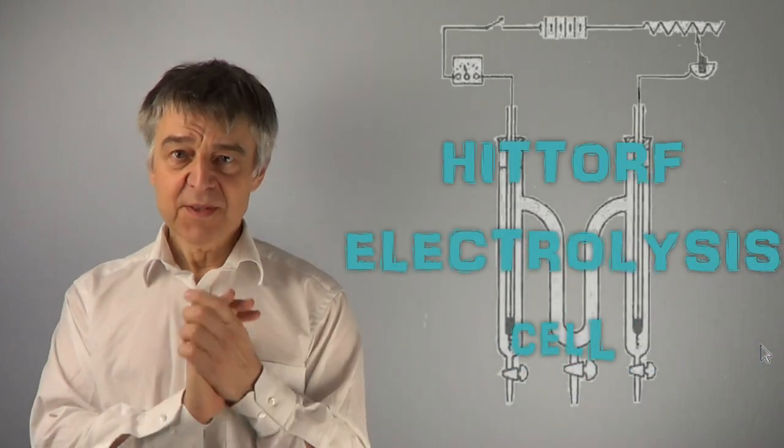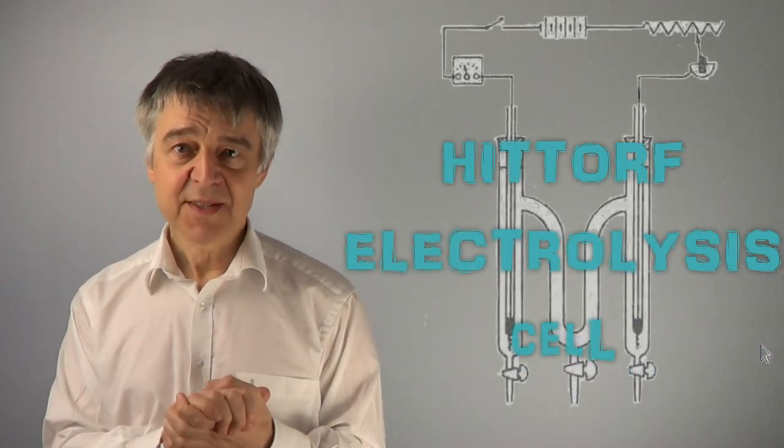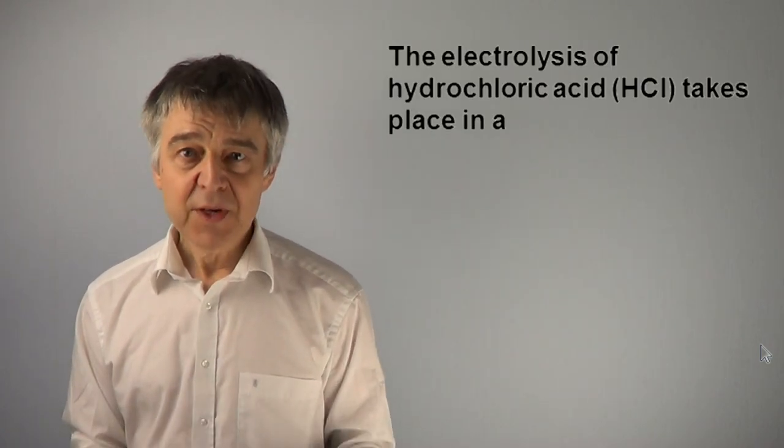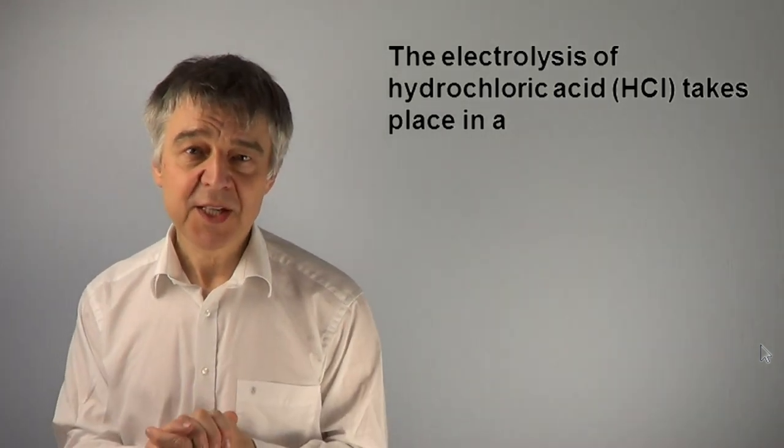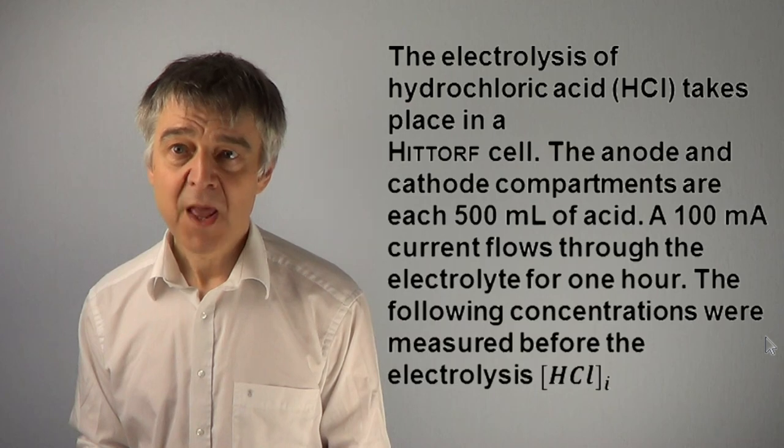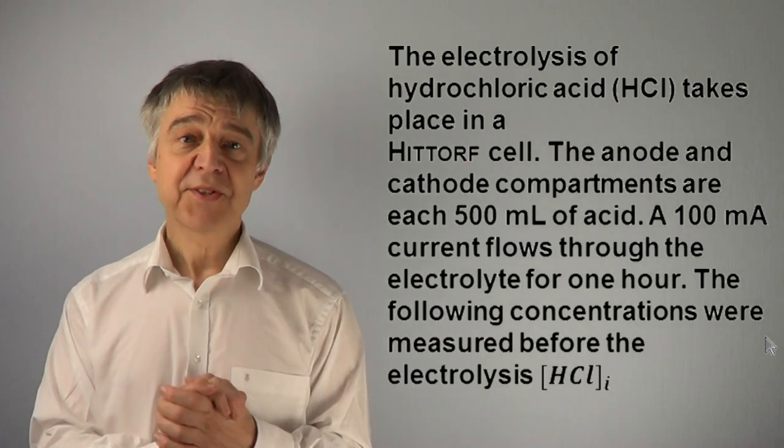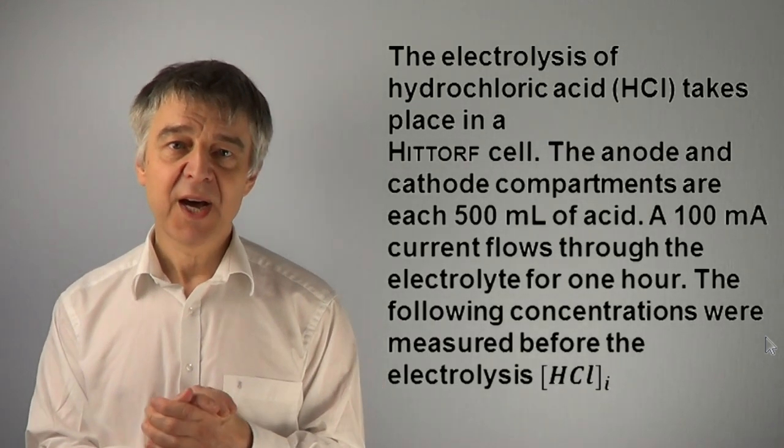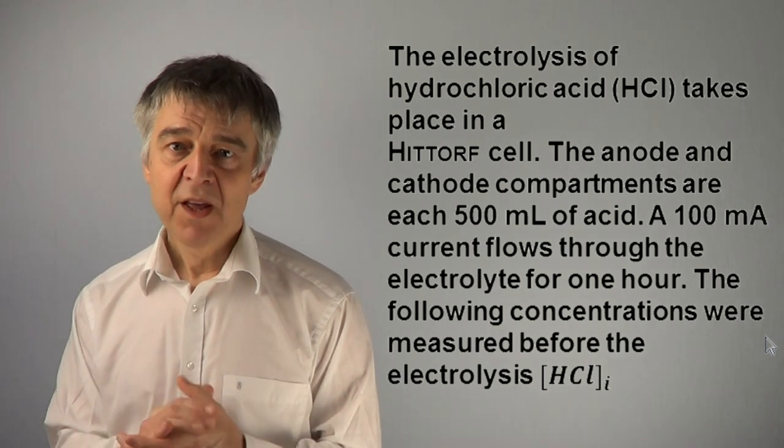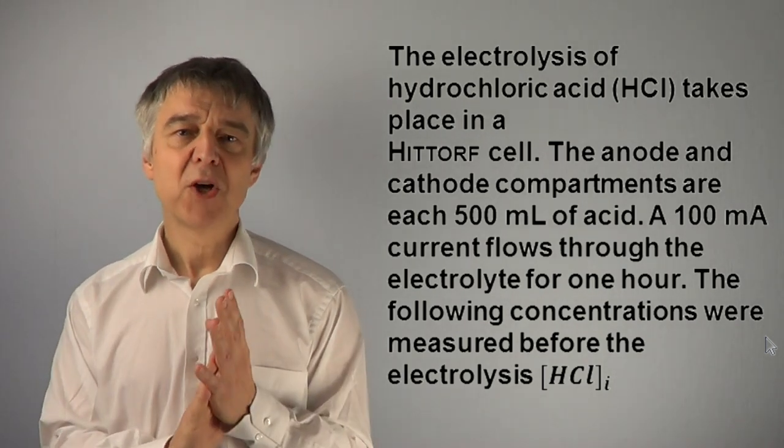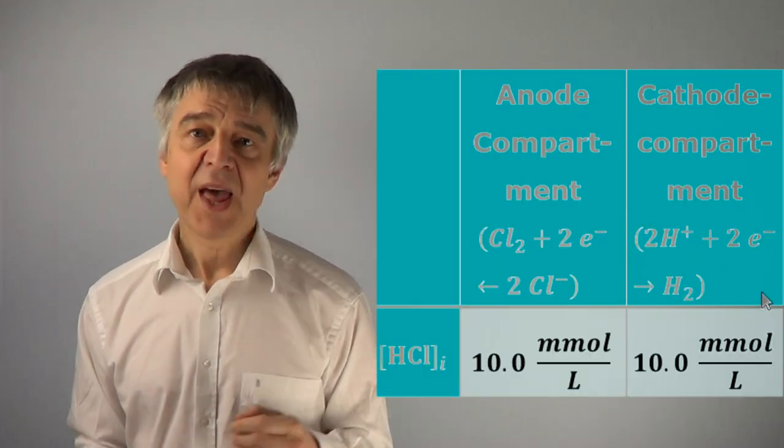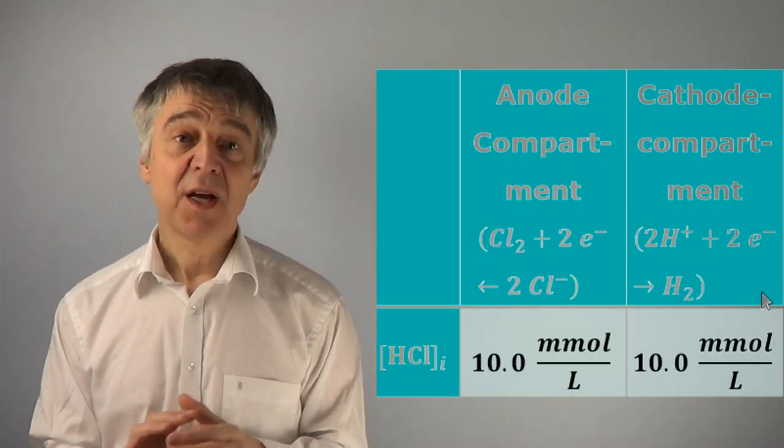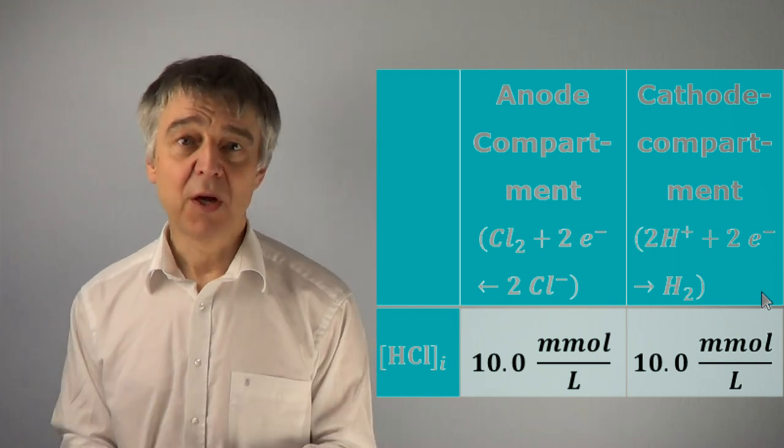The electrolysis of hydrochloric acid takes place in a Hittorf cell. The anode and cathode compartments each contain 500 mL of acid. A 100 mA current flows through the electrolyte for one hour. The following concentrations were measured before electrolysis: both in the anode and cathode compartment, 10 mmol per liter.